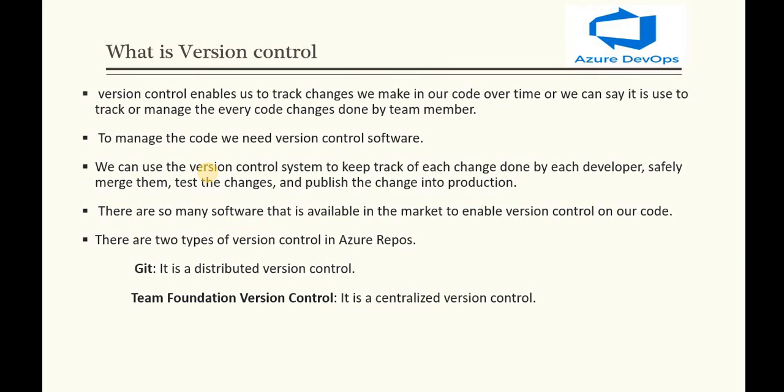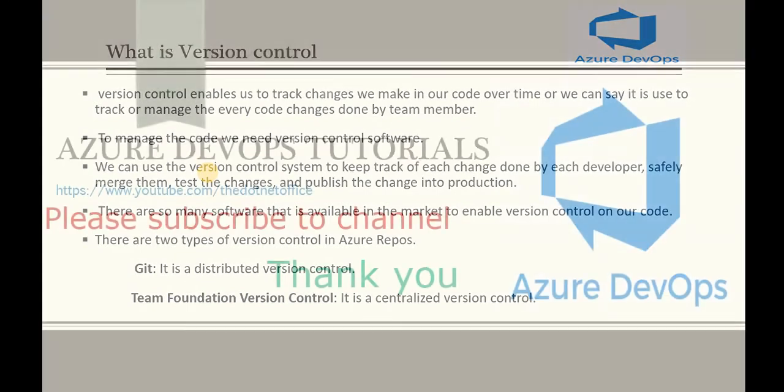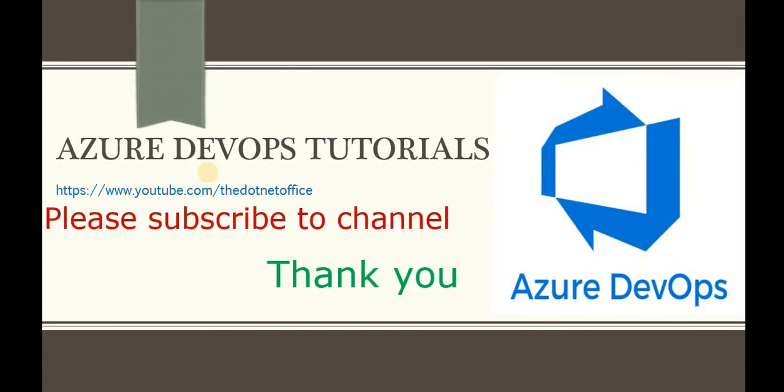We will understand Git and Team Foundation Version Control in more detail in the coming tutorials. In this tutorial we have seen what a repository is — used to keep code in one place — and what version control is — used to track all changes made to the code by developers. That's it for this tutorial. If you have any questions or doubts, please comment. Thank you.